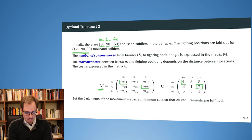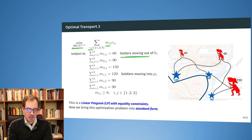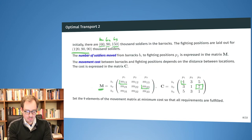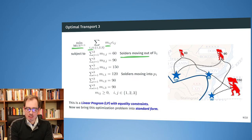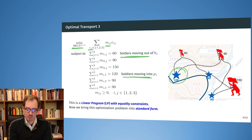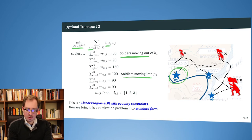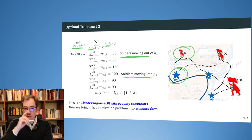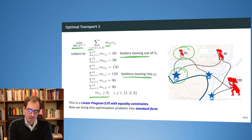In addition, the soldiers moving into position p1 — summing over all entries in the first column — must equal 120. So we have a set of equality constraints ensuring all soldiers are moved and all final positions are fulfilled. We cannot take more soldiers out of a barrack than are initially there. To ensure this, we also constrain that all movements must be greater than or equal to zero.